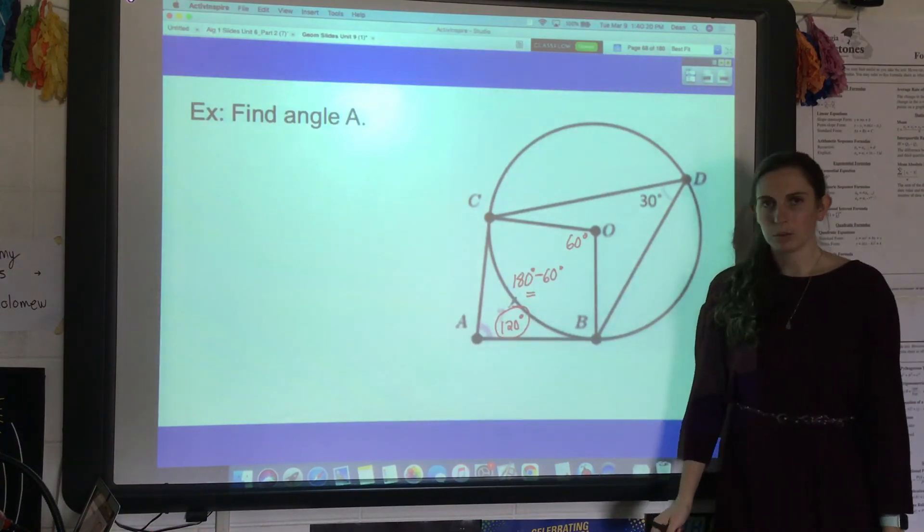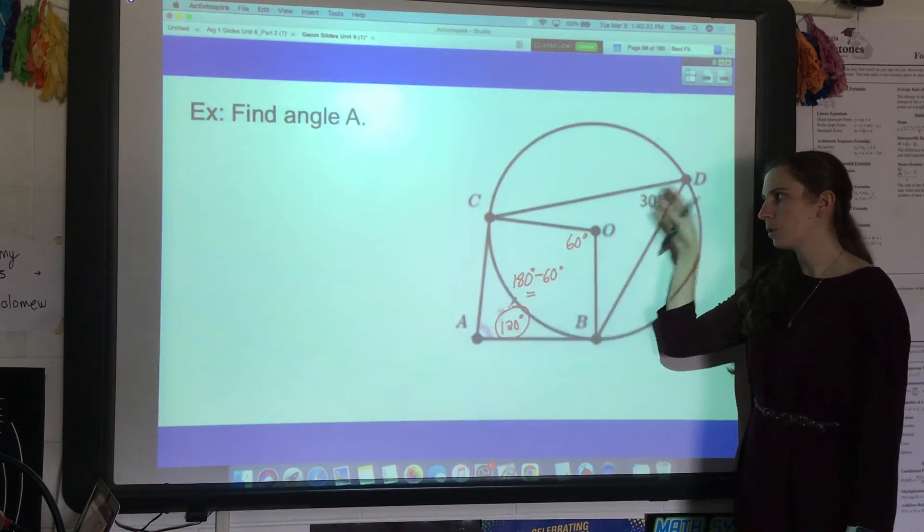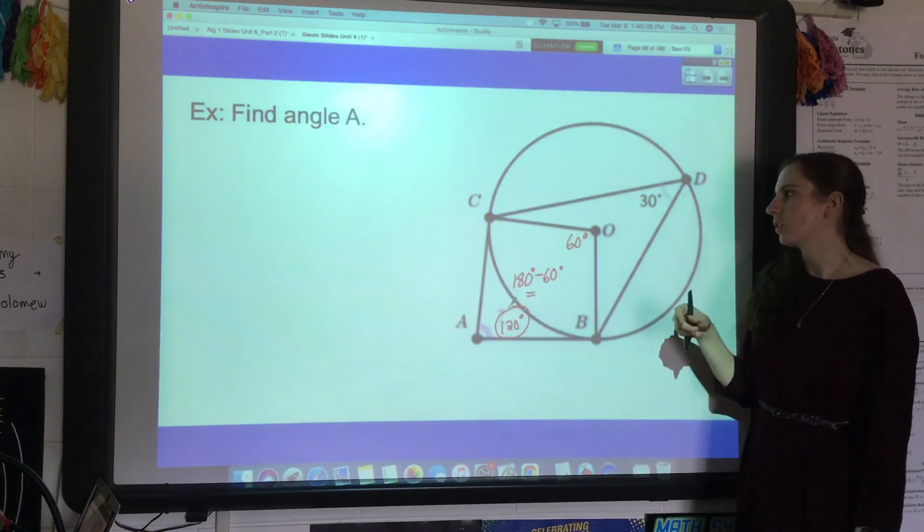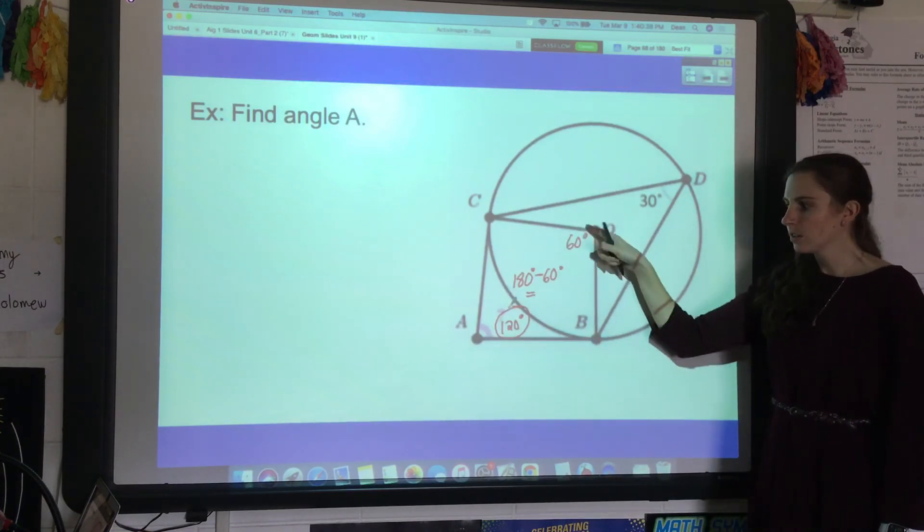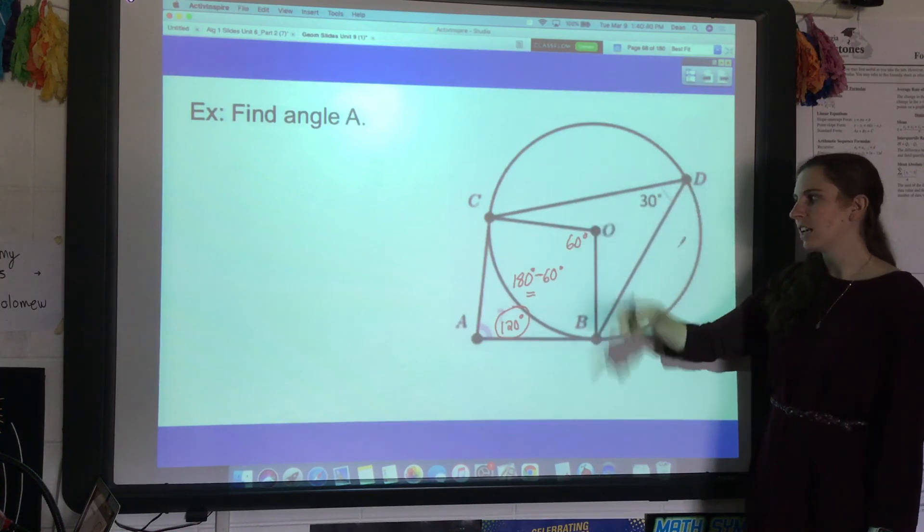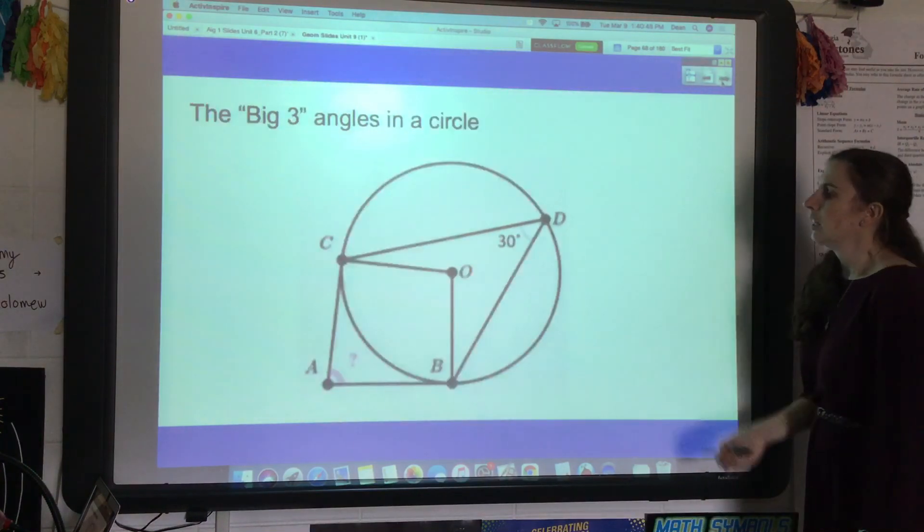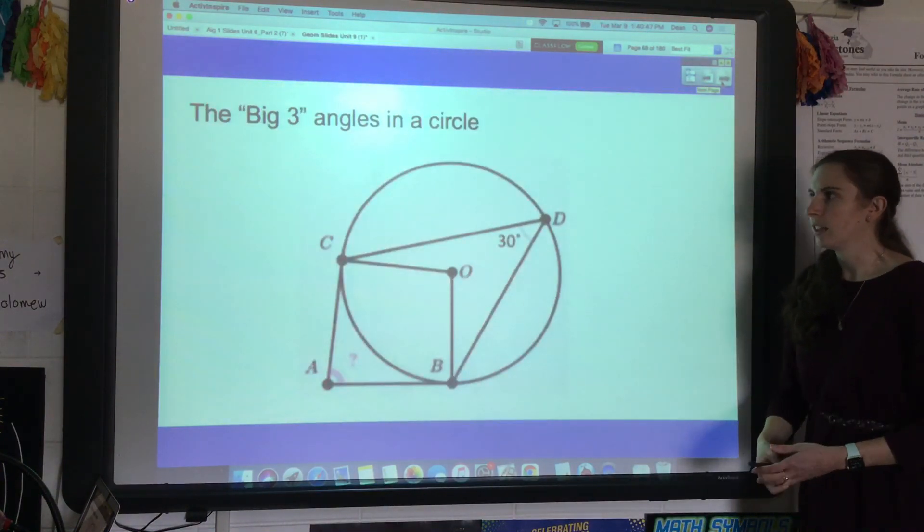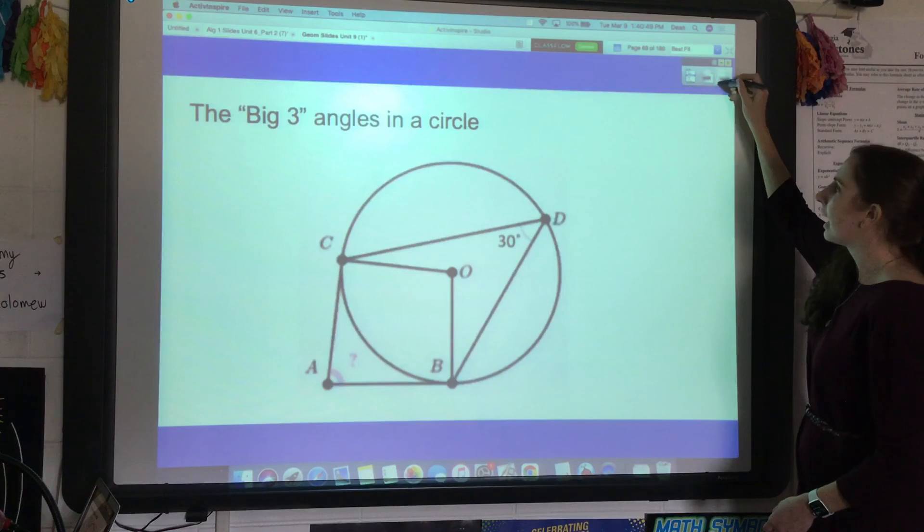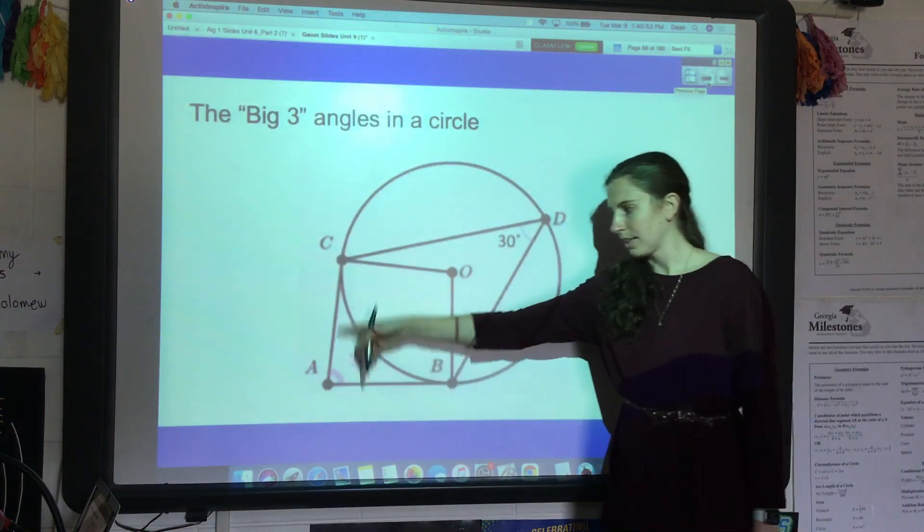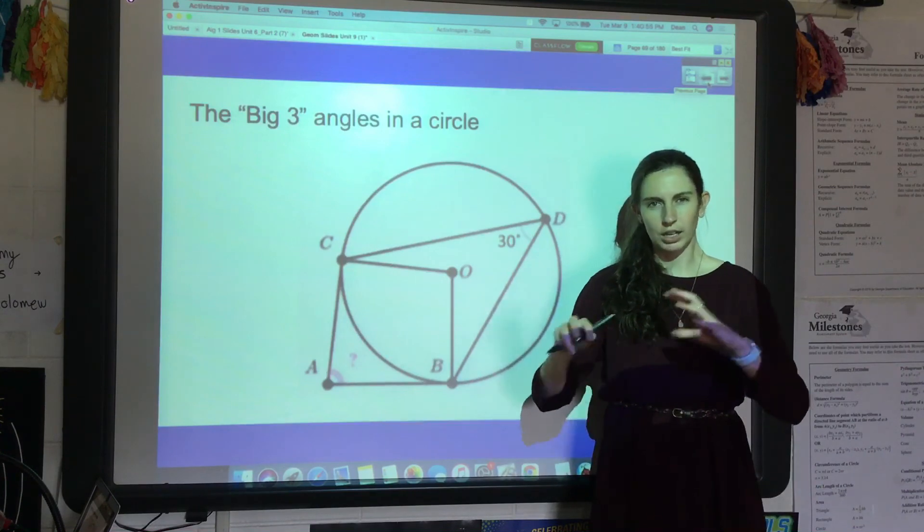So it's really important when we talk about circles to be able to go between these three angles. They're probably the most important that we talk about with circles: central angles, inscribed angles, and circumscribed angles. So again, this is kind of like the big three—you've got inscribed, central, and circumscribed—and they all connect to each other.